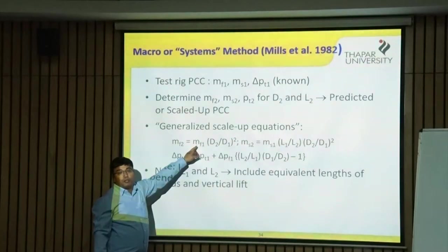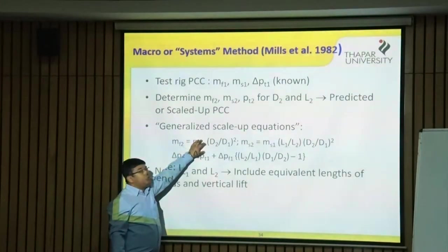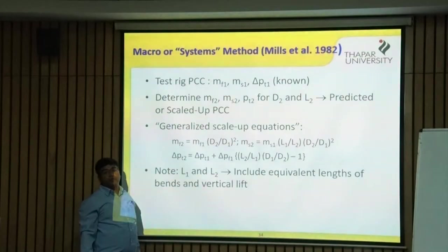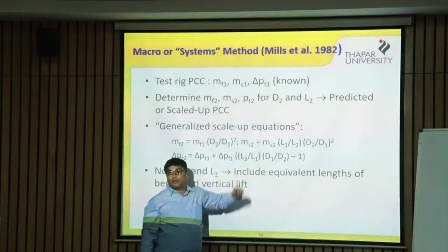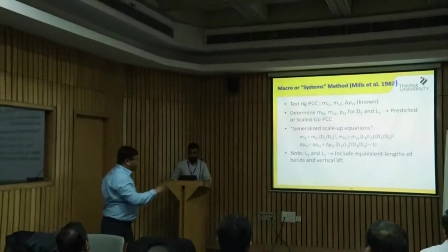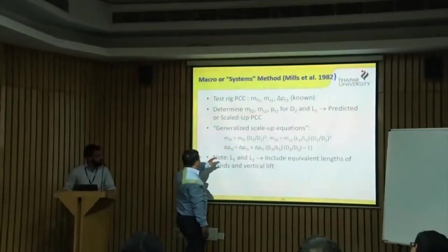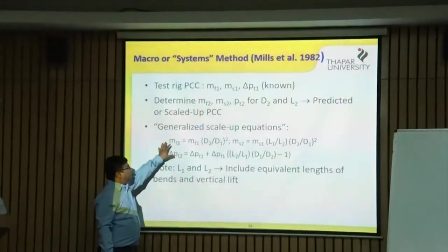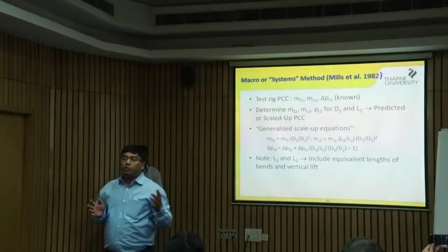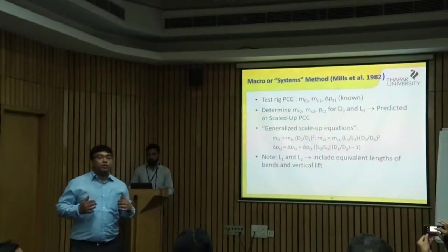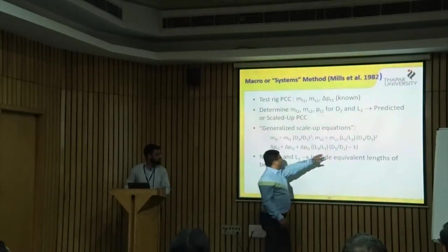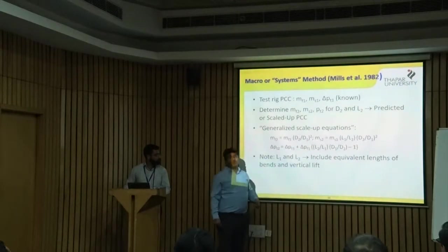If you know the laboratory mass flow rate of gas, you use this equation to scale it up for the industry. Similarly, you can scale up the mass flow rate of solids. There is also an equation for the pressure term. It's somewhat common sense: if you increase the length you will have more pressure drop; if you increase the diameter you will have less pressure drop. The relationship is linear on length and quadratic on diameter.